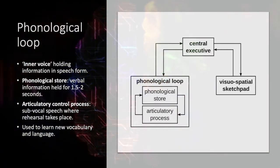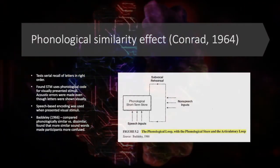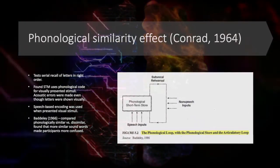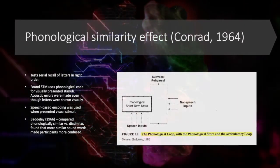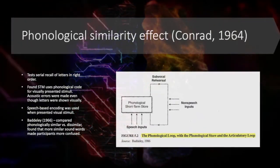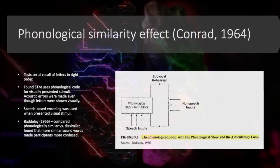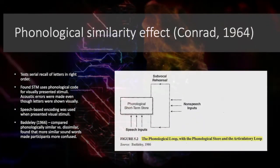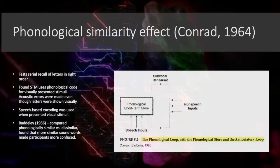Important things to consider include the phonological similarity effect, whereby it tests serial recall of letters in their correct order. It was found that short-term memory uses phonological codes for visually presented stimuli, due to acoustic errors being made even though letters are visually shown — speech format was used to encode visual stimuli. Baddeley in 1966 compared phonologically similar versus dissimilar sounds and words, and found that the more similar a word sounded, the more it confused individuals.